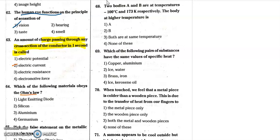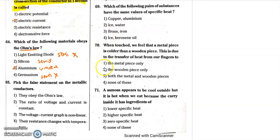Question 64: which of the following materials obeys Ohm's law? Light emitting diode is a semiconductor — it does not obey Ohm's law. Germanium is also a semiconducting material — it also does not obey Ohm's law. Aluminum is a metal, so aluminum obeys Ohm's law. Question 64, the answer is aluminum.